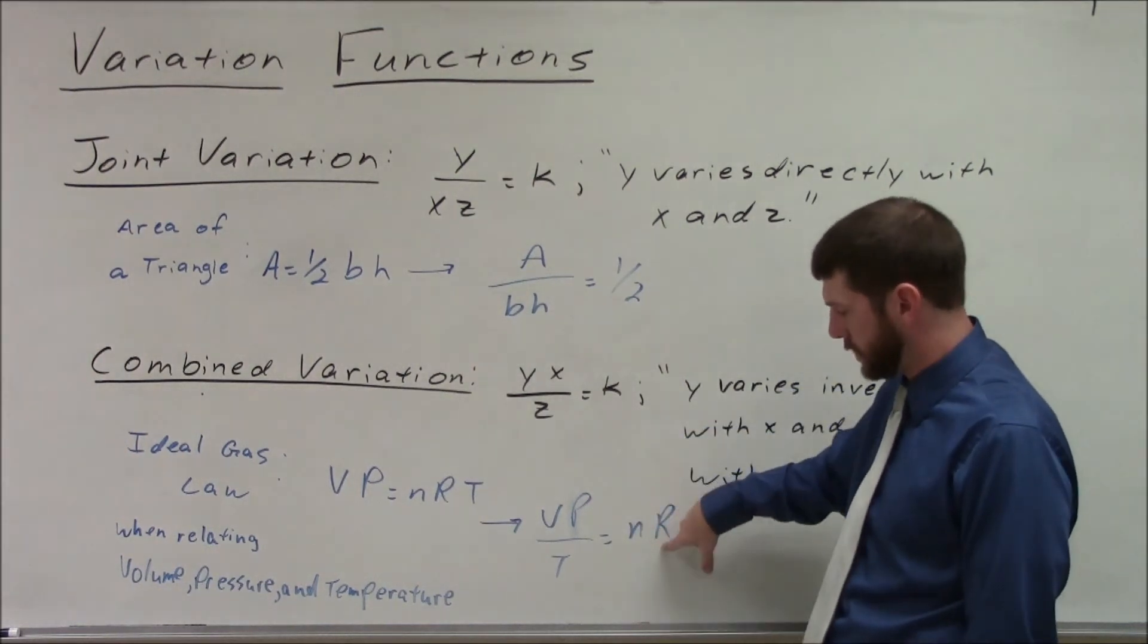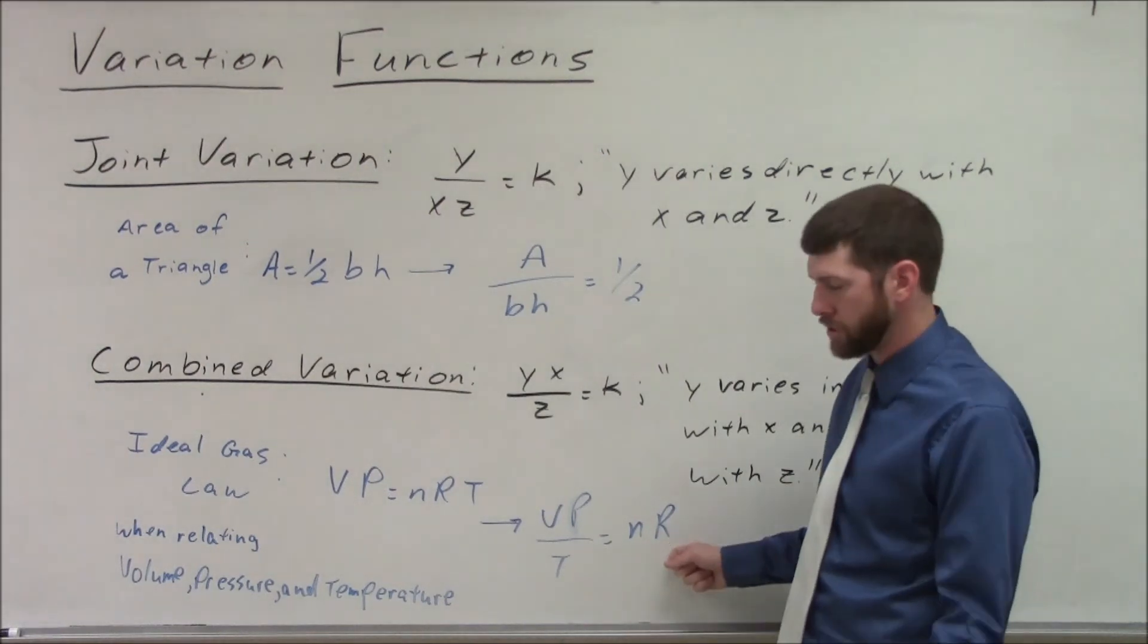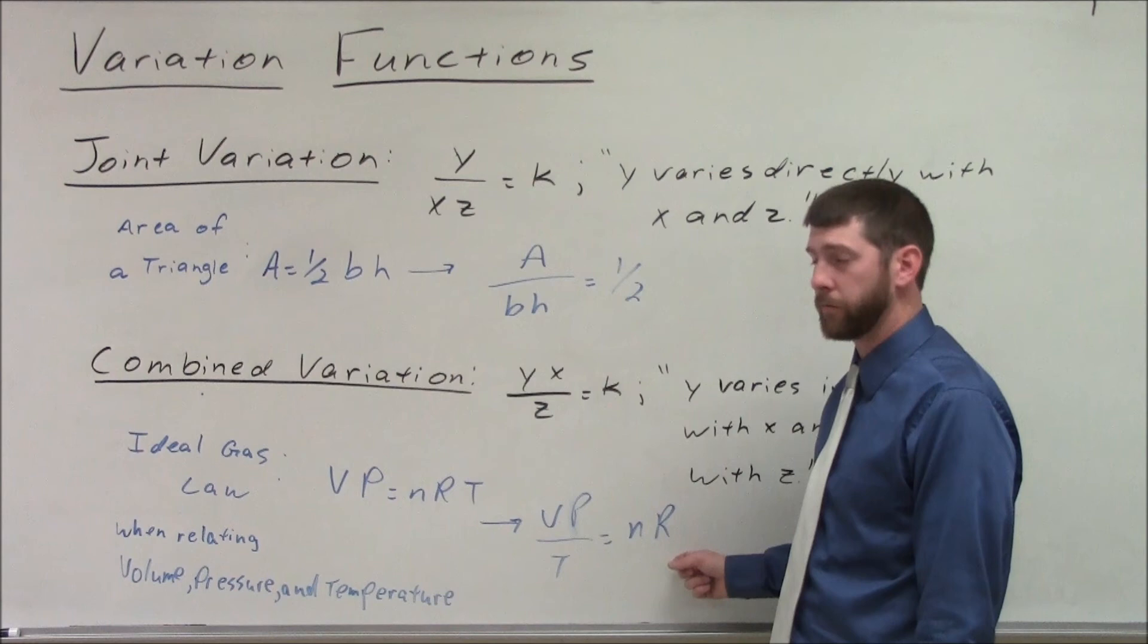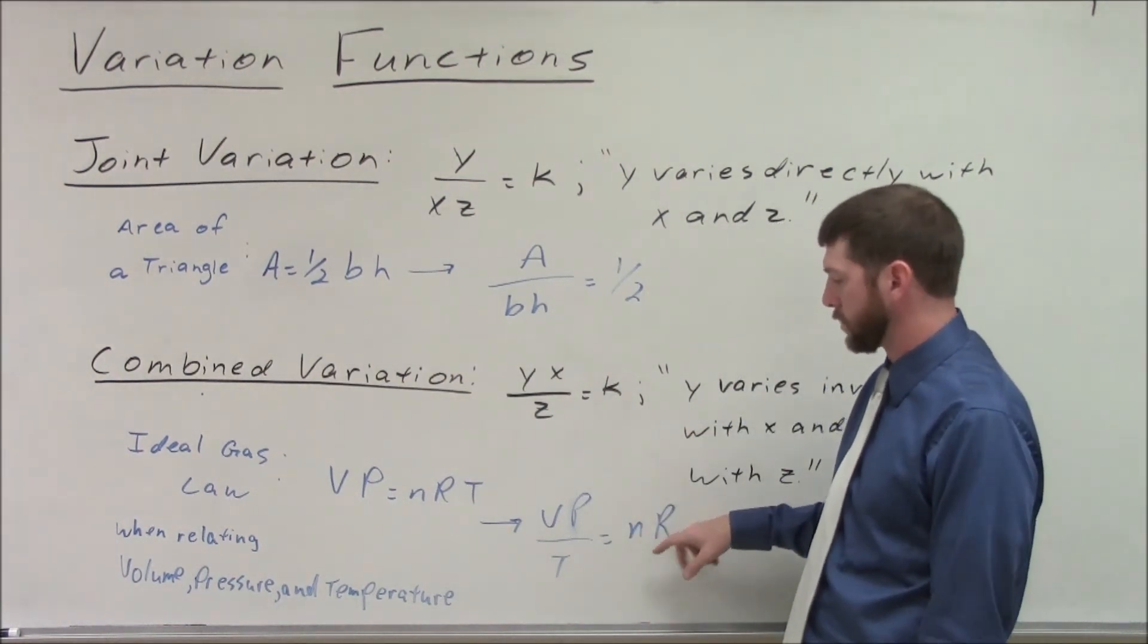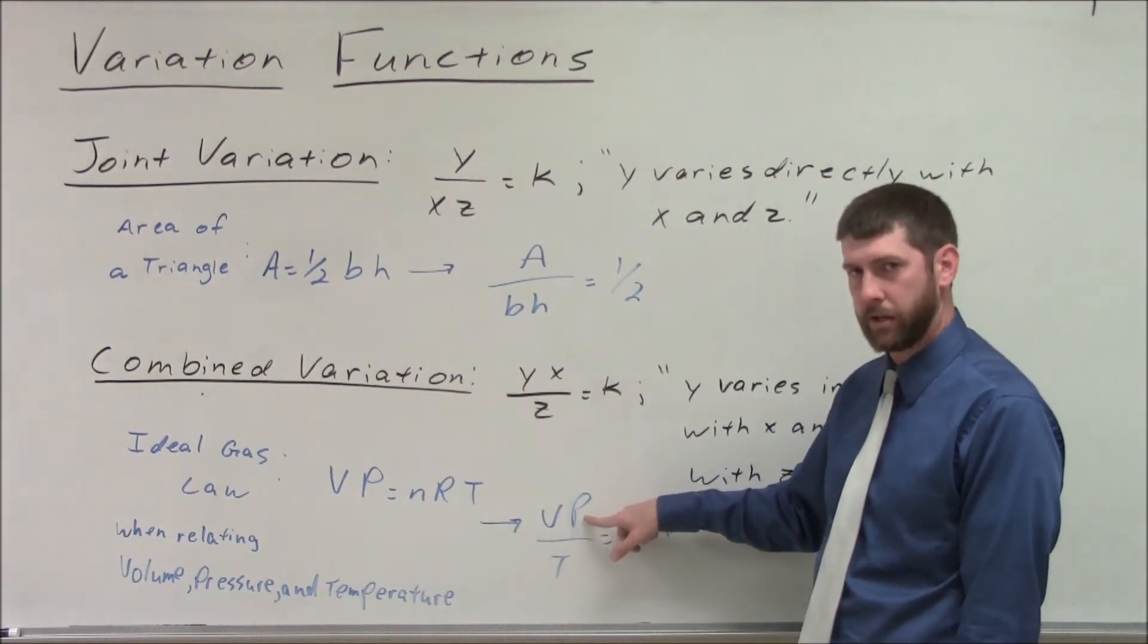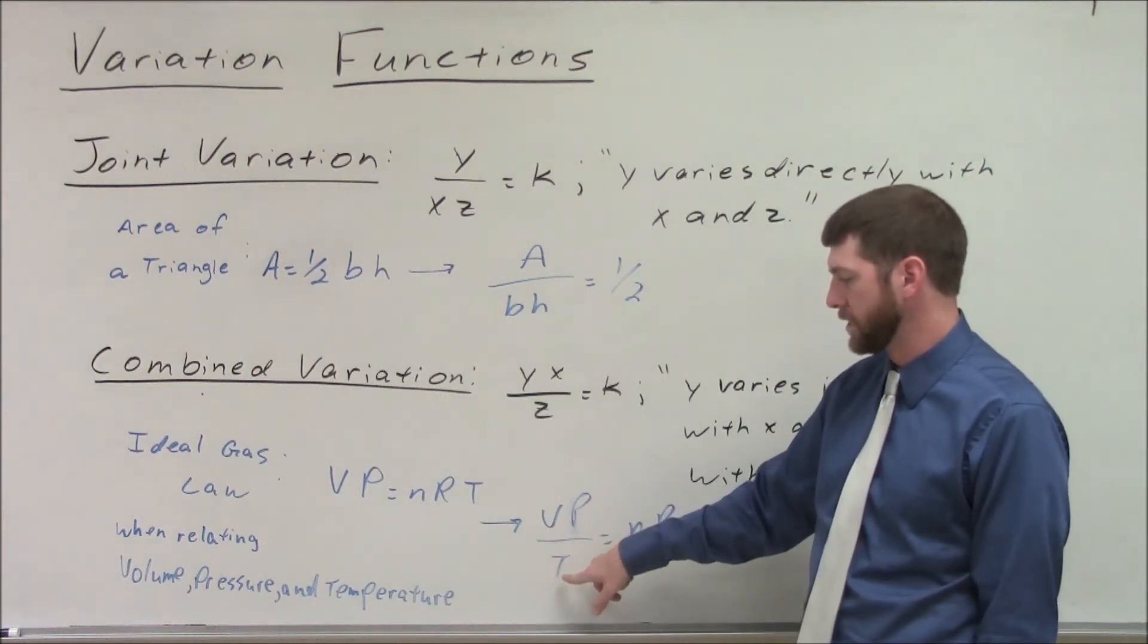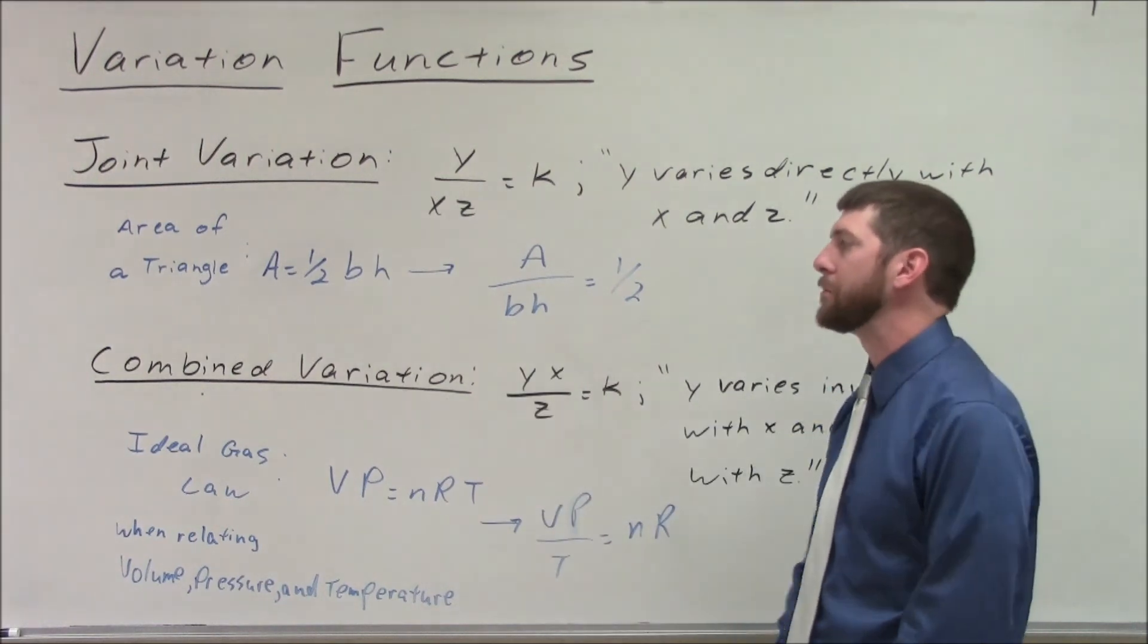Since this relationship here is going to be constant, because we're talking about one amount of gas, and r is already a constant, 0.0821 if we're talking about atmospheres. So this is your constant ratio, so we can see the volume is inversely related, or varies inversely with the pressure, and the volume varies directly with the temperature. So that's an example of combined variation.